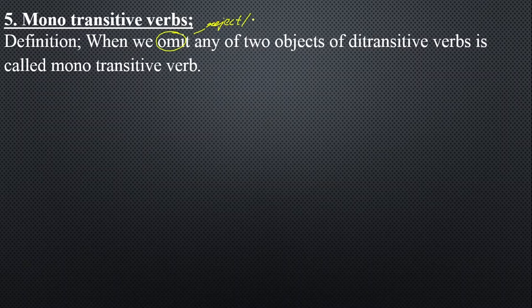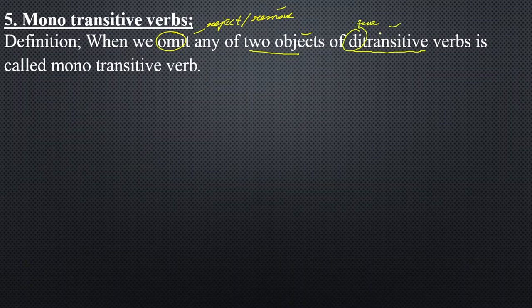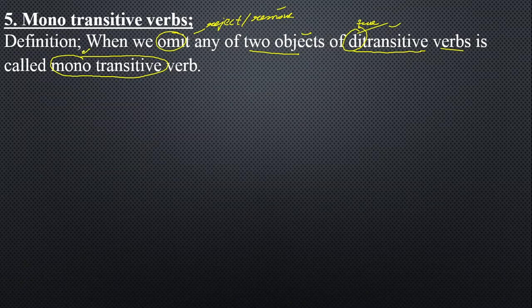In di-transitive verbs, 'di' or 'D' means two — transitive means a verb that can be changed into passive voice and shows an action. So from di-transitive verbs, when you omit one of the objects, your verb changes into mono transitive. Mono transitive means one object. I have already discussed di-transitive verbs with you, and I will be sharing the link in the description box so it will be easy for you to understand.